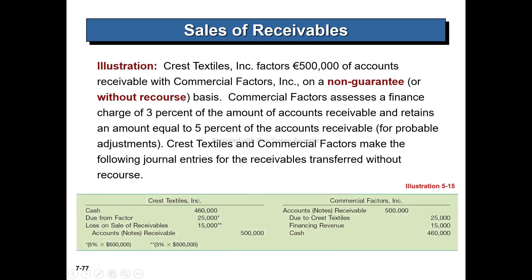For example, Chris Textile is factoring $500 of accounts receivable at a loss on sale with Commercial Factors. The bank arrangement with Commercial Factors is not guaranteed without recourse. Commercial Factors charges a financial charge.